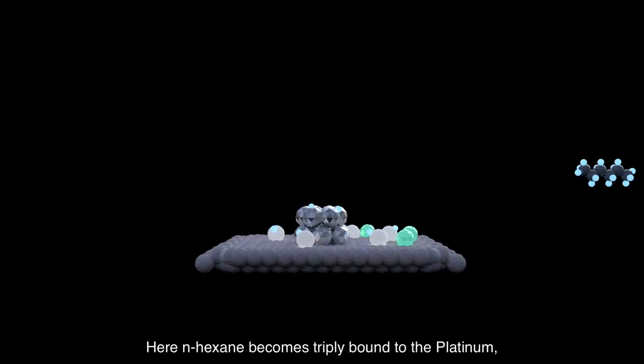Cracking isn't limited to acid sites. It can also occur on a platinum cluster. Here, n-hexane becomes triply bound to the platinum, which then severs the terminal carbon, forming methane and n-pentane.